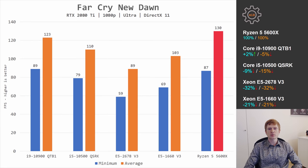In Far Cry New Dawn — historically favoring Intel CPUs — the Ryzen 5 5600X still provides very similar performance to the Core i9-10900: average FPS is 5% better, minimal FPS is 2% worse. The Core i5-10500 loses 9% and 15%. The Xeon E5-2678v3 falls further behind, losing 32%, and the overclocked Xeon E5-1660v3 loses 21% to the Ryzen 5 5600X.